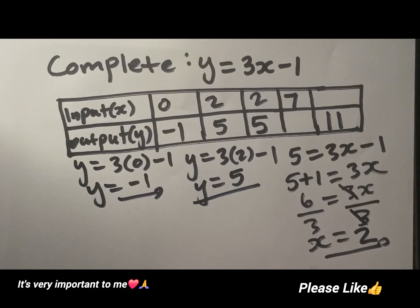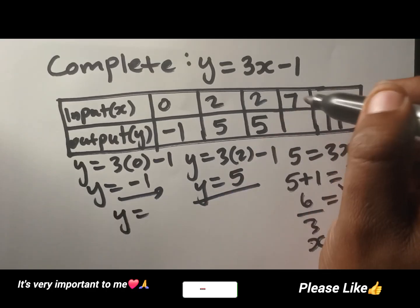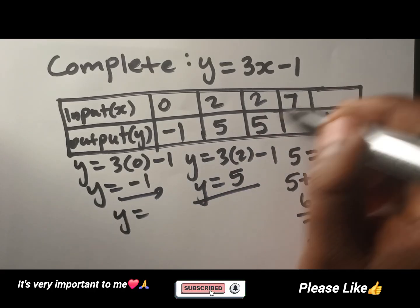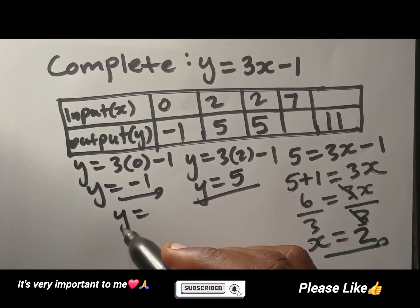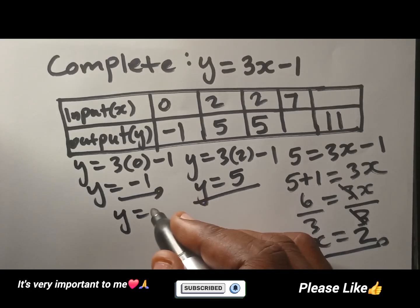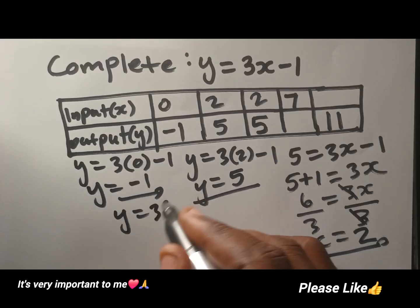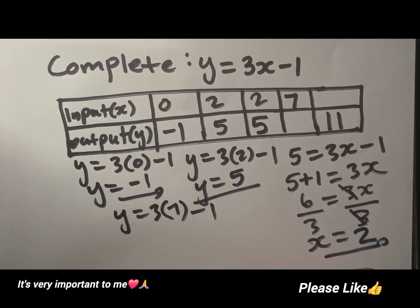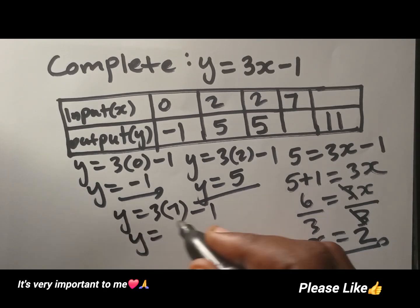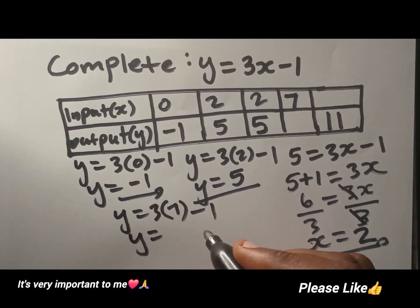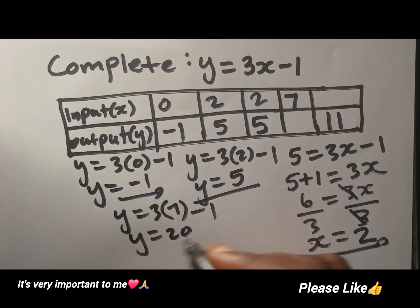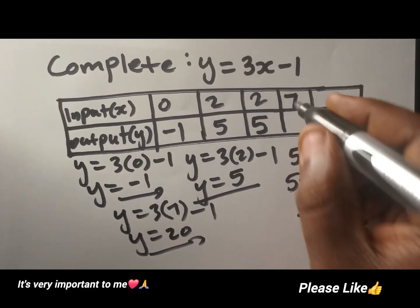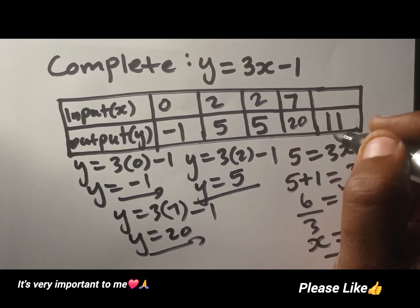Let's move on to the next one. We are going to use 7 as our input to get the output, which is y in this case. So it's 3 into 7 minus 1. Remember, 3 times 7 is going to be 21, minus 1 is going to be 20. So this is our output in this case.